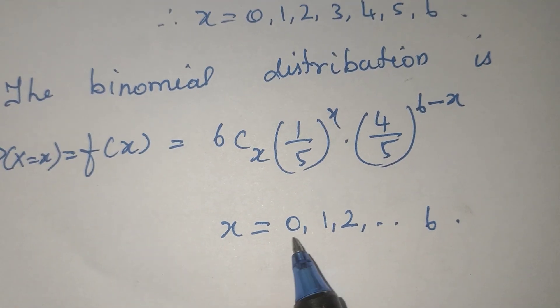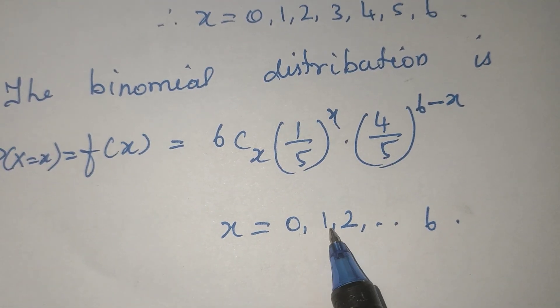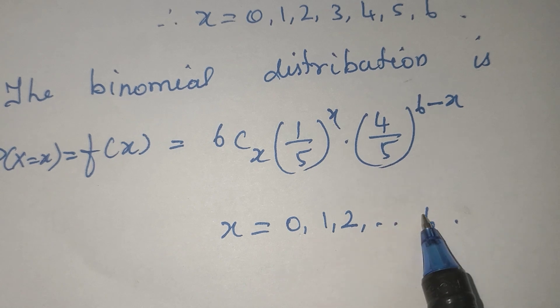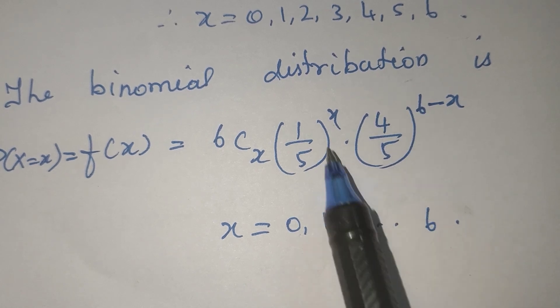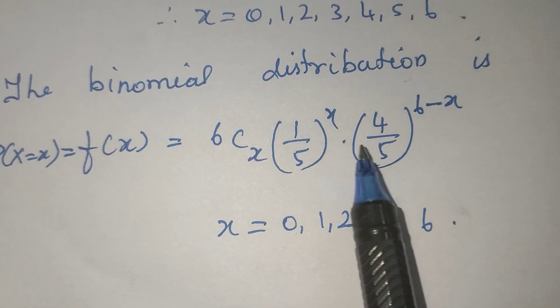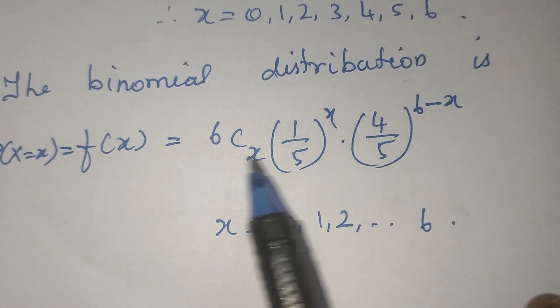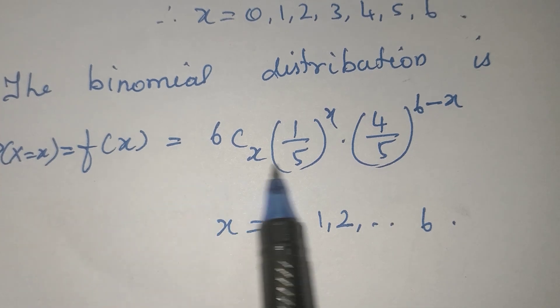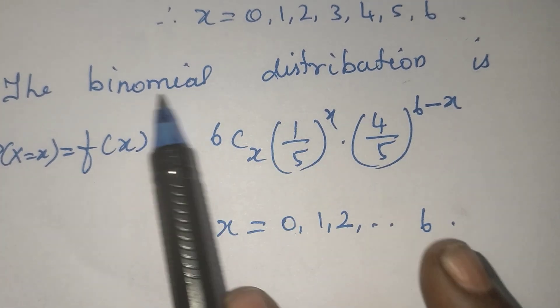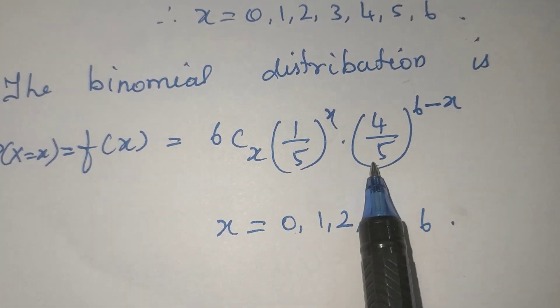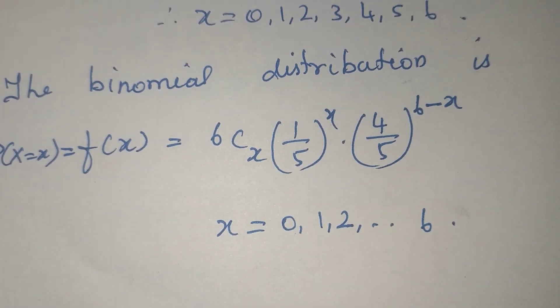Where X is equal to 0, 1, 2, 3, up to 6. This is the probability function for the binomial distribution for the number of defective products.